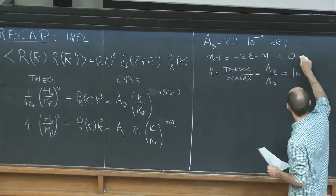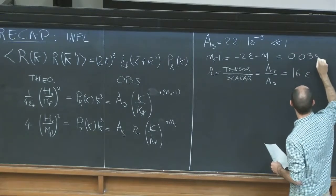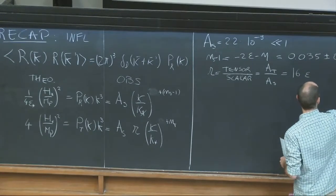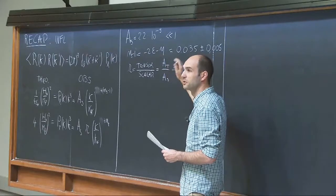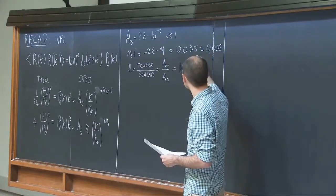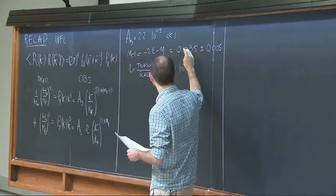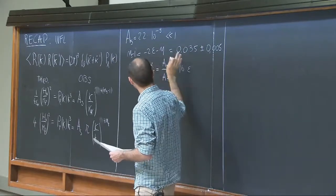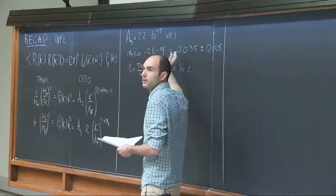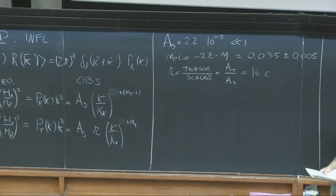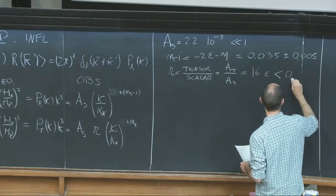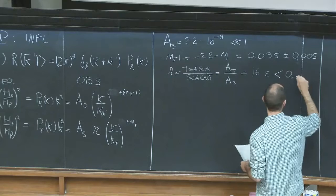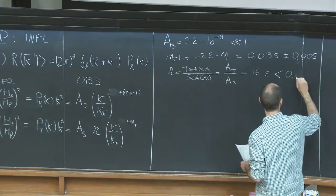The tilt is also measured — something like 0.04 or less. There is a deviation from zero at 7 or 8 sigma depending on what parameters you include, so it's really measured. Inflation likes this because it predicts the tilt should be proportional to something small, and this is indeed small. The tensor-to-scalar ratio has not been measured; the most recent upper bounds from Planck and BICEP give R smaller than 0.07.